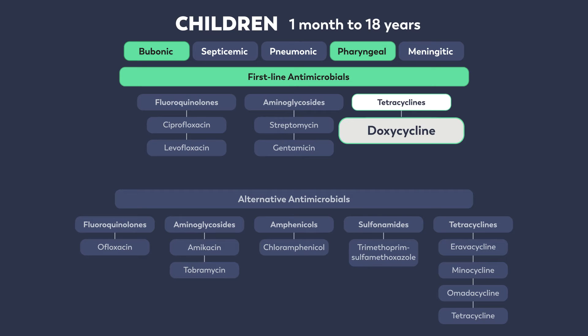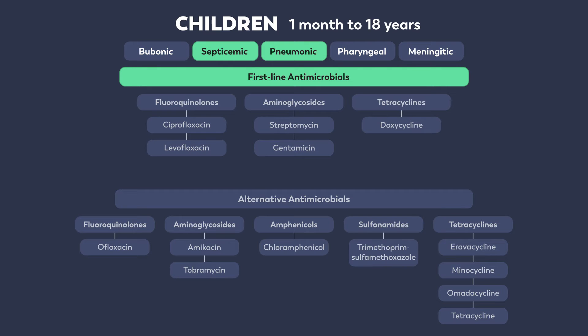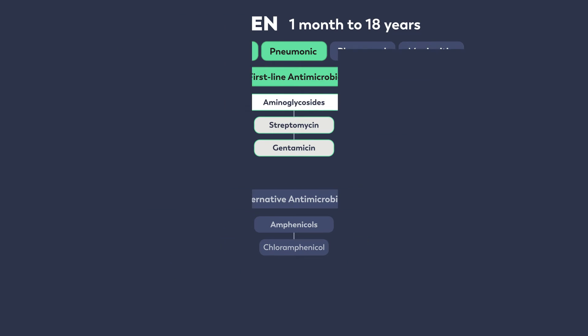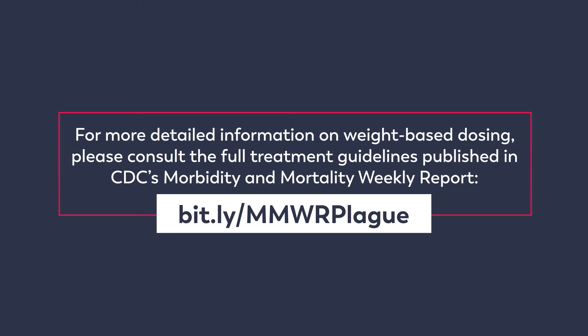Doxycycline may be safely administered to children under the age of 8, as there is no evidence of tooth staining when given in short courses of 2 weeks or less, and prompt treatment of plague is life-saving. A loading dose of doxycycline should be administered for both children and adults. For pneumonic or septicemic plague, first-line antimicrobials are the fluoroquinolones and aminoglycosides shown here. For detailed information on weight-based dosing, including maximum doses for children, please consult the full treatment guidelines published in CDC's MMWR.